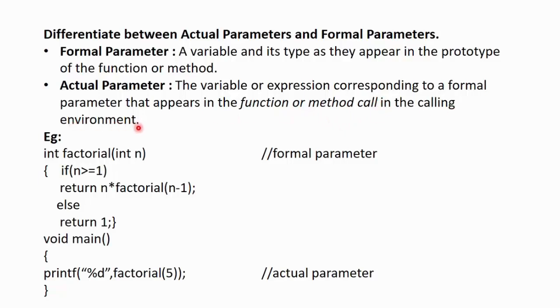Let us understand this with the help of an example. Here, we are using recursion to calculate the factorial of a given number. So, factorial is the name of our function that accepts one integer argument n and its return type is also integer. This int n is the formal parameter as it is appearing in the prototype of the function factorial.